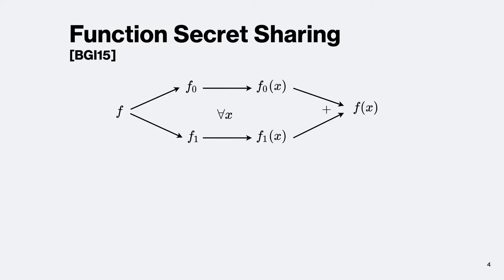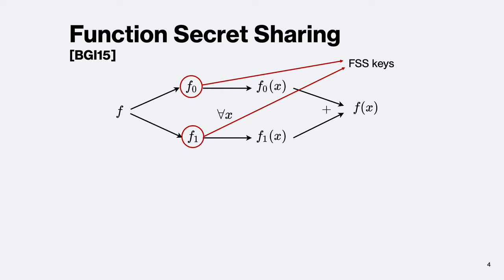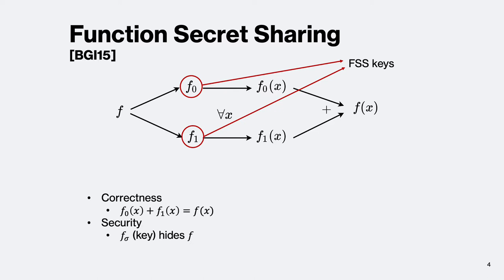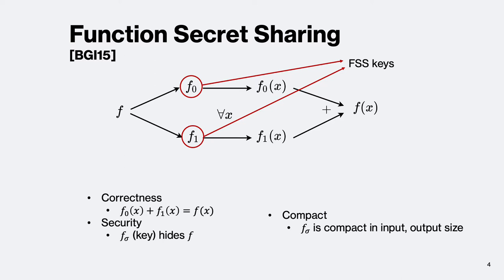What is function secret sharing? Think of a function f with outputs in a finite abelian group. With FSS, you can split the function into two shares f0 and f1, give one share to each party, who can now locally evaluate the function on inputs x in the domain, such that when their local evaluations are added together you get back the output of the original function f. These function shares are typically called FSS keys. There are two main properties needed: correctness, meaning local evaluations sum to the original function's output; and security, where a single FSS key hides the original function f. We also add compactness, meaning the FSS keys are compact in input and output size.